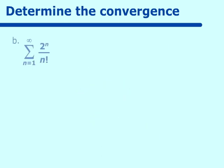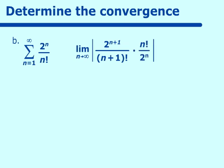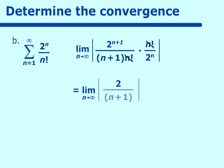Next: 2 to the n over n factorial. The ratio test works very well with factorials. The limit as n approaches infinity of 2^(n+1) over (n+1)! times n! over 2ⁿ simplifies because n! over (n+1)! is 1/(n+1), giving us 2 over n+1. That goes to 0, which is less than 1 — the series converges.